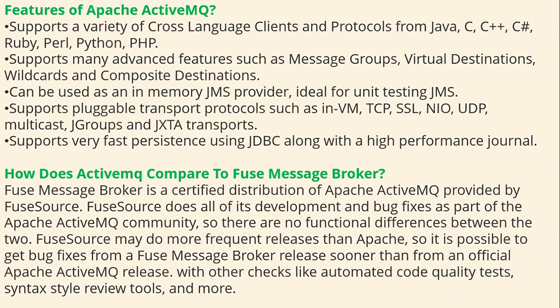Features of Apache ActiveMQ: ActiveMQ supports a variety of cross-language clients and protocols such as Java, C, C++, C#, Ruby, Perl, Python, and PHP. It supports many advanced features such as Master Groups, Virtual Destinations, Wild Cards, and Composite Destinations. It can be used as an in-memory JMS provider, ideal for unit testing. It supports pluggable transport protocols such as INVM, TCP, SSL, NIO, UDP, Multicast, JGroups, and JXTA transport. It also supports fast persistence via JDBC along with high-performance journaling.